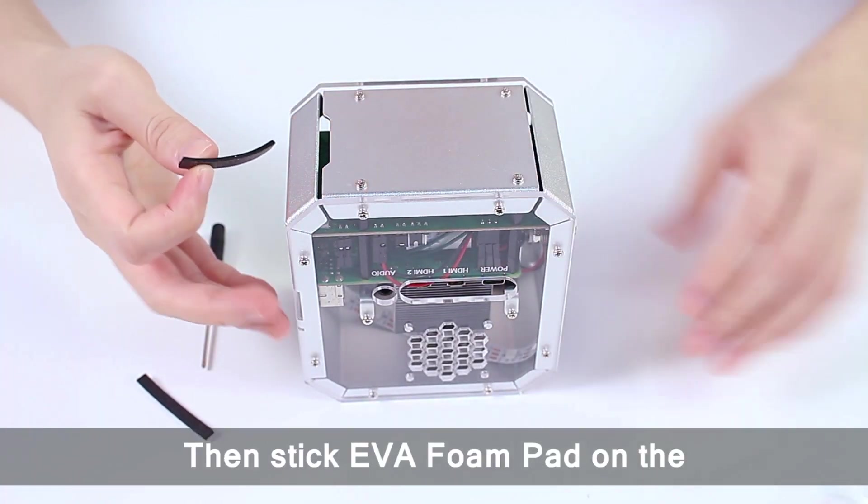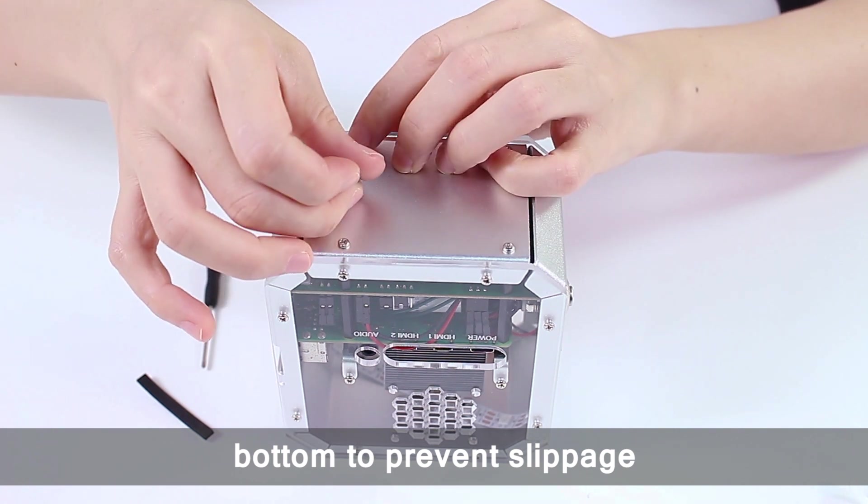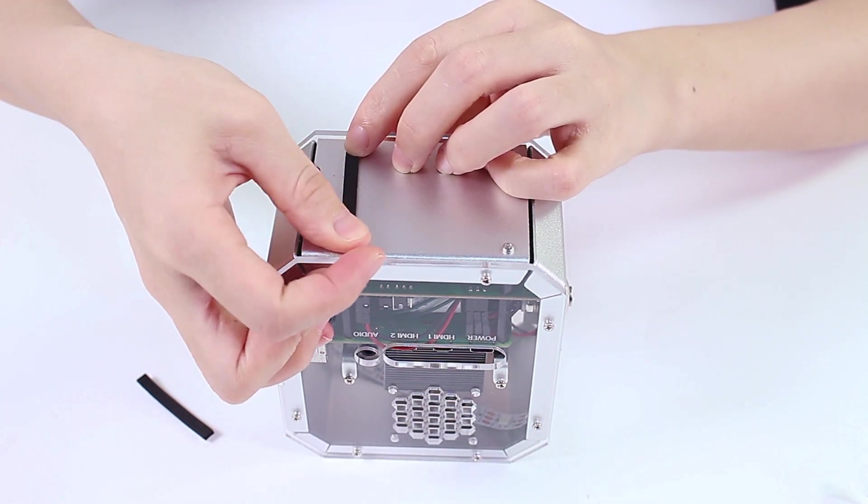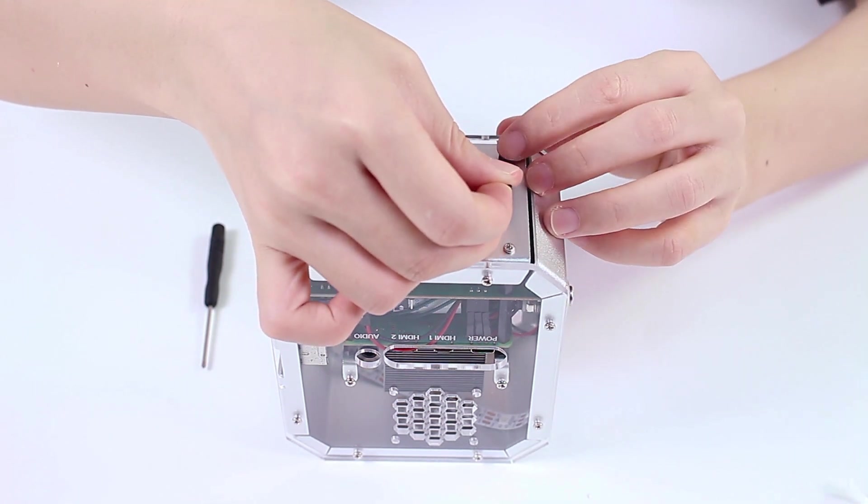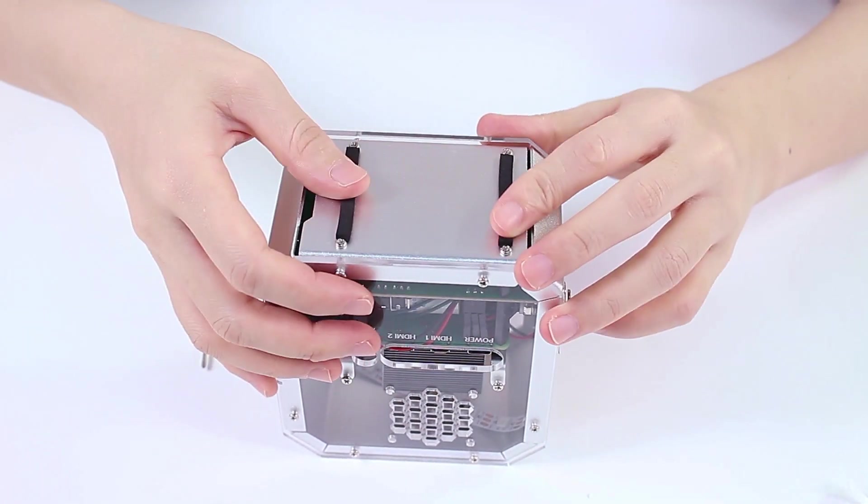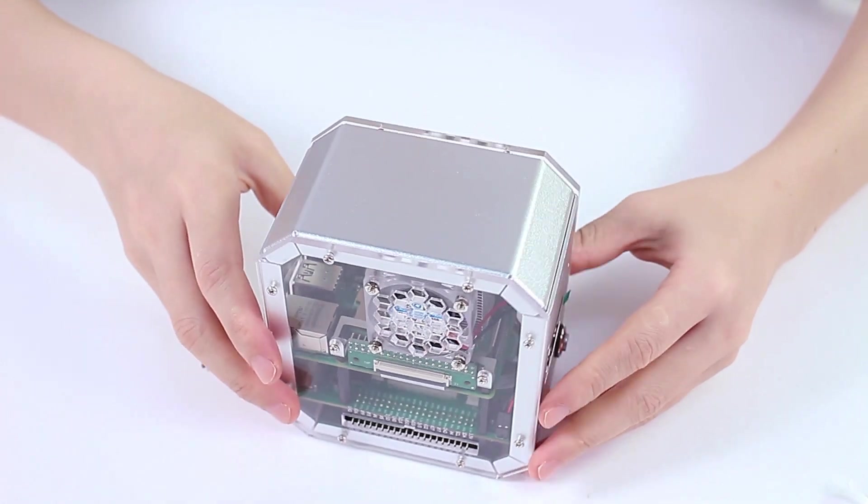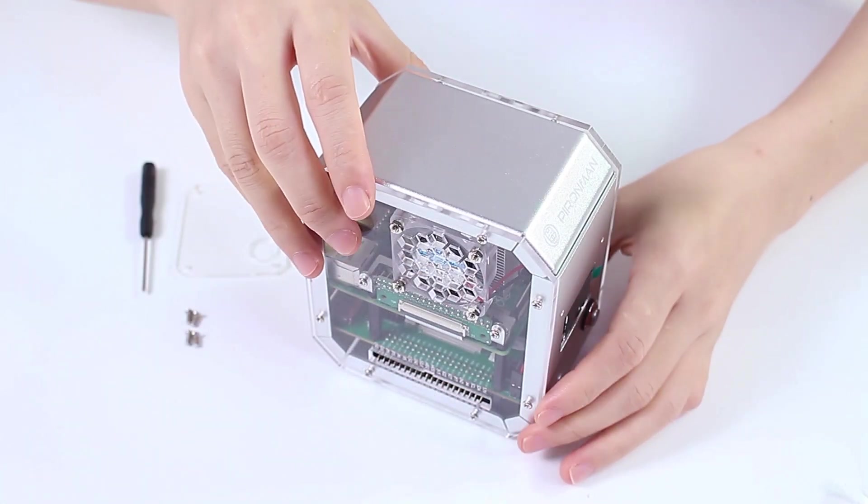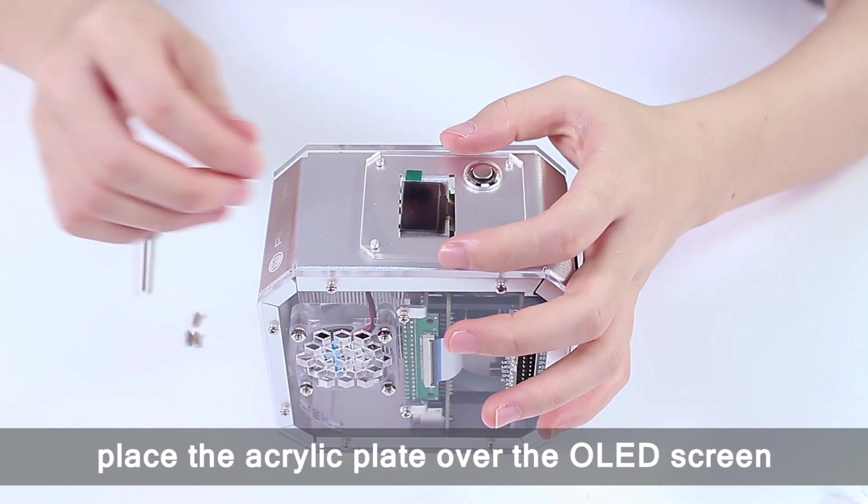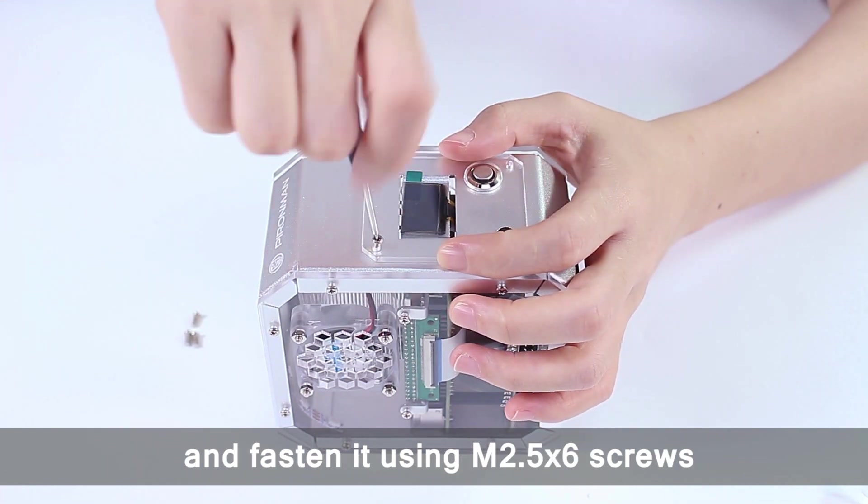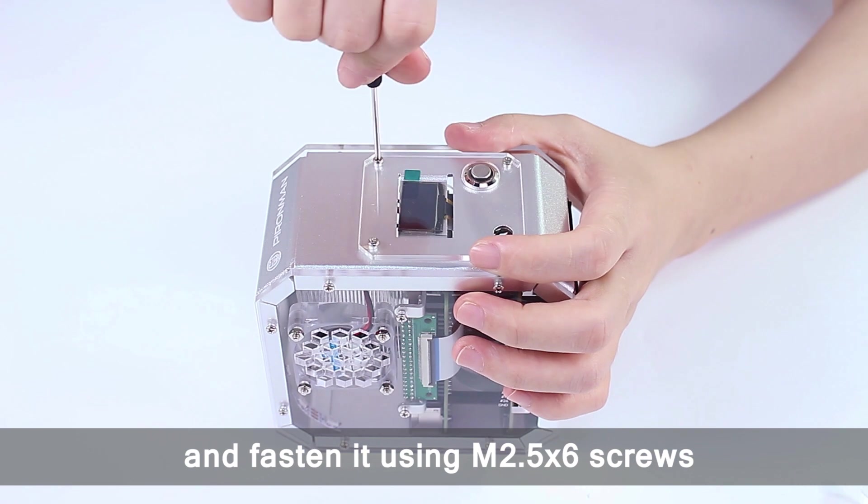Then stick EVA foam pad on the bottom to prevent slippage. Lastly, place the acrylic plate over the OLED screen and fasten it using M2.5 by 6 screws.